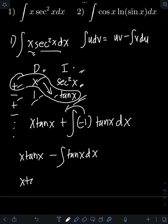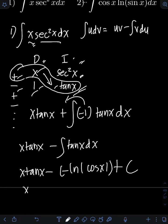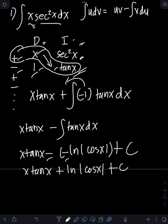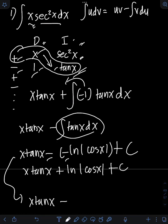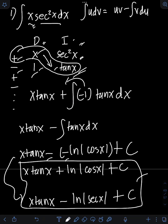We can have two forms of the answer. We can use negative ln of cosine x, giving us x tan x minus negative ln cosine x, which simplifies to x tan x plus ln of cosine x plus C. Or using the other form, we have x tan x minus ln of sec x plus C. So we can have two equivalent forms of the final answer.